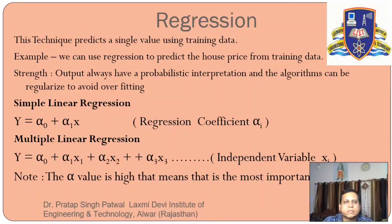So first of all, we have to understand the definition of regression. This technique, regression is a technique to predict a single value using the training data. For example, we can use regression to predict the house price from the training data. The strength is output always has a probabilistic interpretation and the algorithm can be regularized to avoid overfitting.